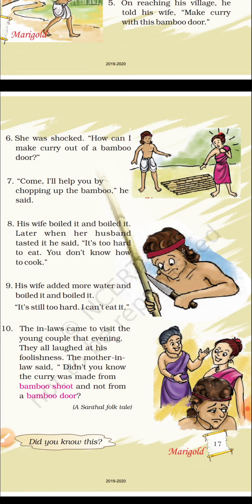Ninth point: his wife added more water and boiled it and boiled it again. Then her husband tasted it and said it is still too hard — I can't eat it. The wife added more water and boiled again, but it was still too hard and the husband said he couldn't eat it.